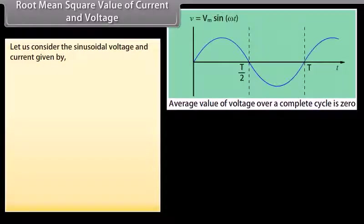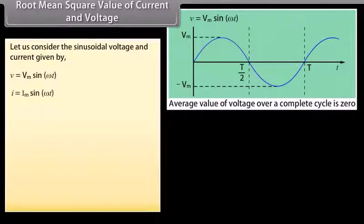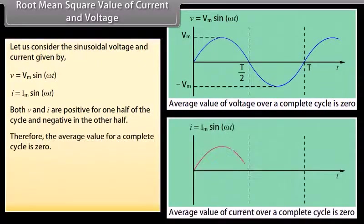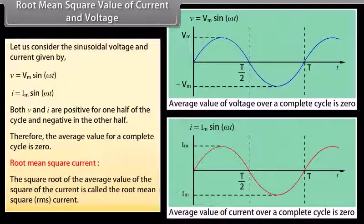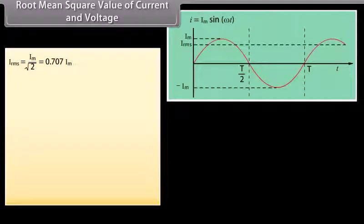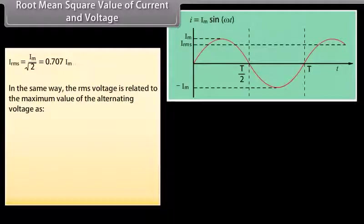Root mean square value of current and voltage: consider the sinusoidal voltage and current given by V = Vm sin(ωt). Both V and I are positive for one half of the cycle and negative in the other half. Therefore, the average value of a complete cycle is zero. The root mean square current: the square root of the average value of the square of the current is called the RMS current. Irms = Im/√2 = 0.707 Im.